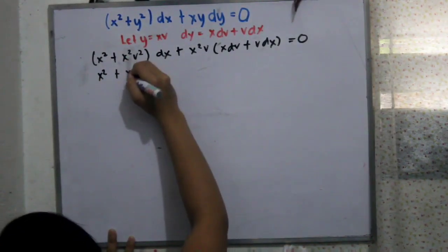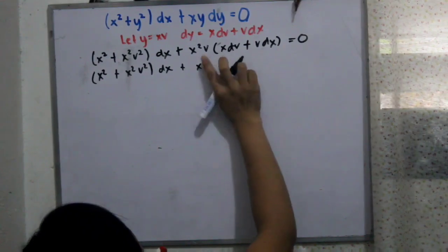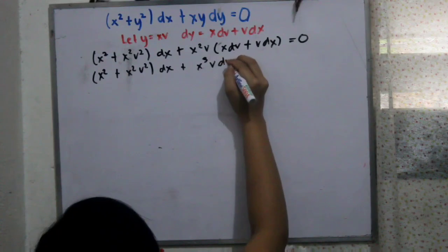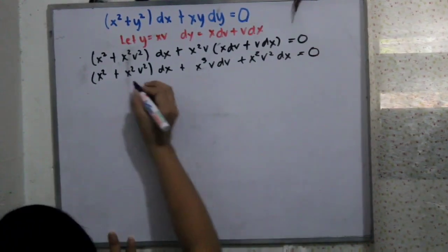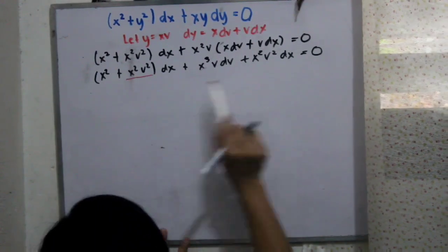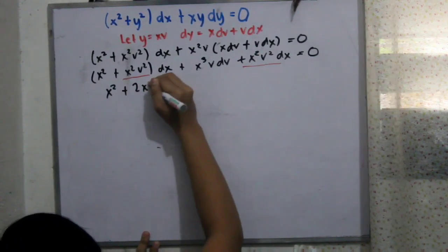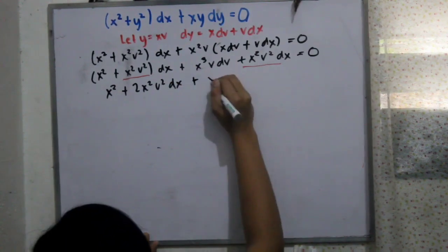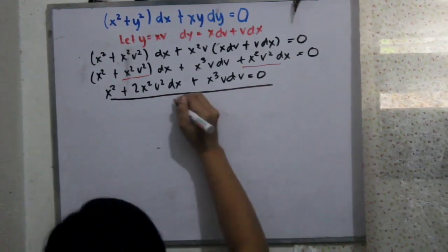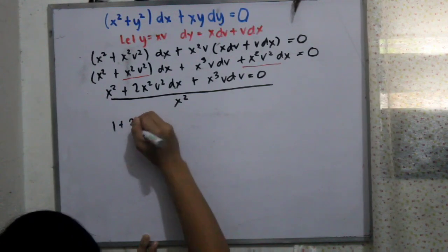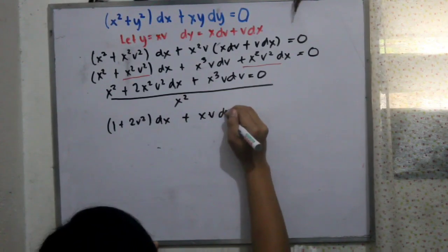Expanding: x squared plus x squared v squared dx plus x cubed v dv plus x squared v squared dx. We have like terms, so combining them gives x squared plus 2x squared v squared dx plus x cubed v dv, all equal to zero. Dividing everything by x squared, we are left with 1 plus 2v squared dx plus xv dv equals zero.